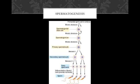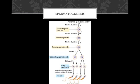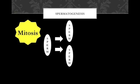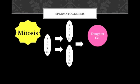Sperm cells are produced through a process known as spermatogenesis. Three processes are involved in spermatogenesis: mitosis, meiosis, and spermiogenesis. The first process, mitosis, begins with the mitotic divisions of sperm cells. After each division, one daughter cell travels closer to the lumen of the seminiferous tubules.